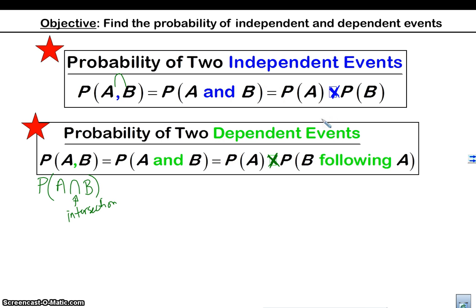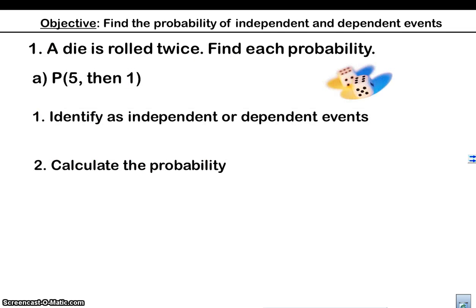Let's take a look. A die is rolled twice. Find the probability that we roll a five and then a one. Well, let's think about this for a second. If I roll a five first, then I pick up my dice. When I roll a one, does it matter what I rolled the first time? Does the probability change here depending upon what I rolled the first roll? It does not. I still have a one in six chance to roll a one. So these events are independent because it doesn't matter what I rolled here when I rolled here. It doesn't change the probability at all.